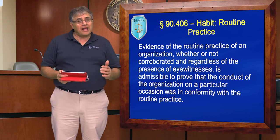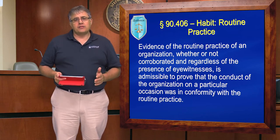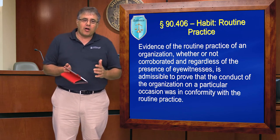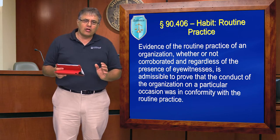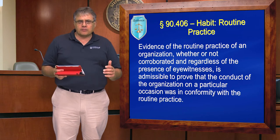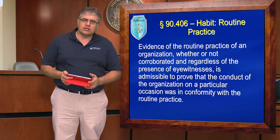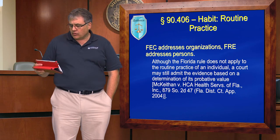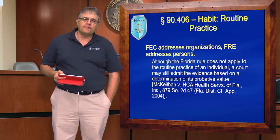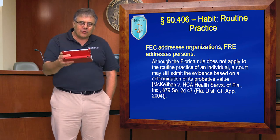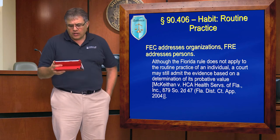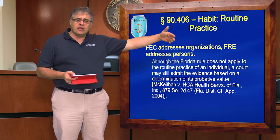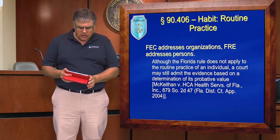Habit is very narrow—you've really got to hit all the points to make it work. But when you can, you're not even concerned with the possibility of requiring corroboration. It has phenomenal cosmic power within its teeny tiny space. Where new lawyers most often make a mistake is in trying to apply habit where it just doesn't meet the requirements of the rule. Although the Florida rule does not apply to the routine practice of an individual, a court may still admit the evidence based on the determination of its probative value—through case law, habit evidence can be admitted for the individual. The key case is McKeithen v. VACA Health Services of Florida, a 2004 case.